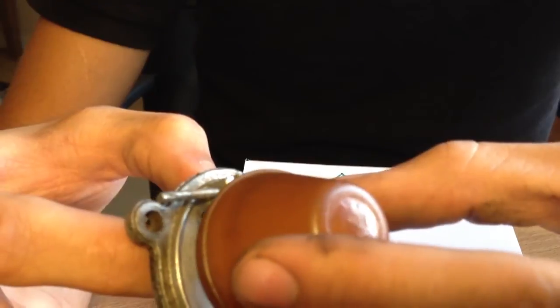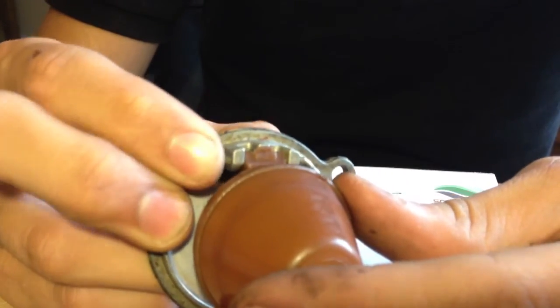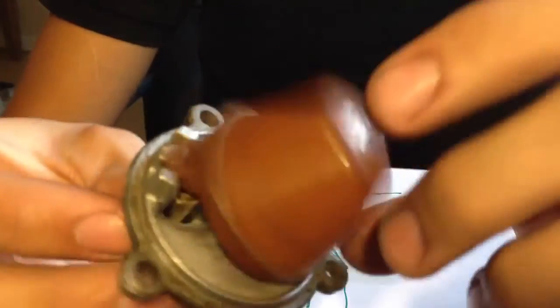Then, we're going to pop our plastic float back into place. We're going to push our securing pin across and that's now in place.